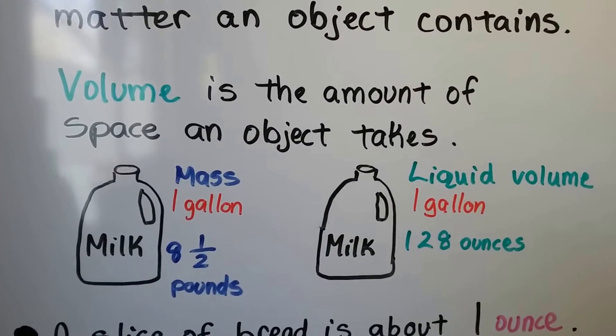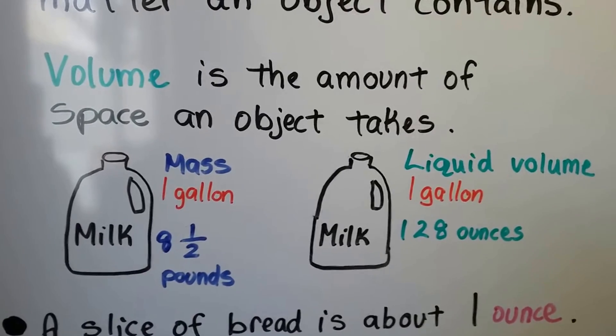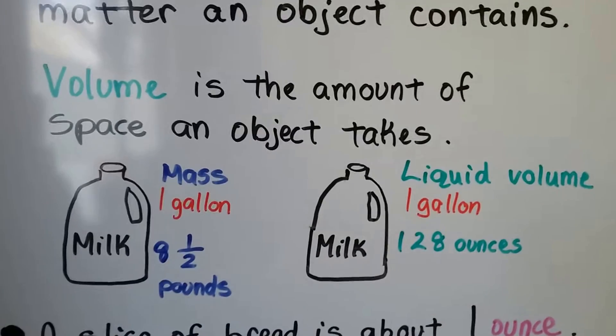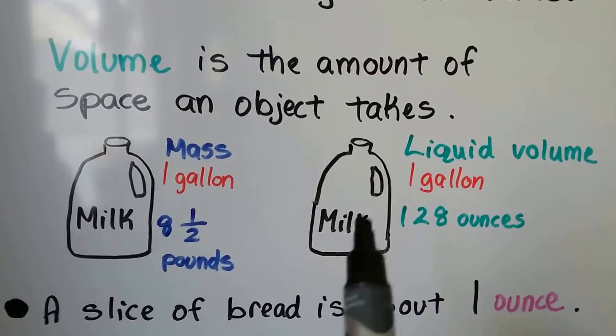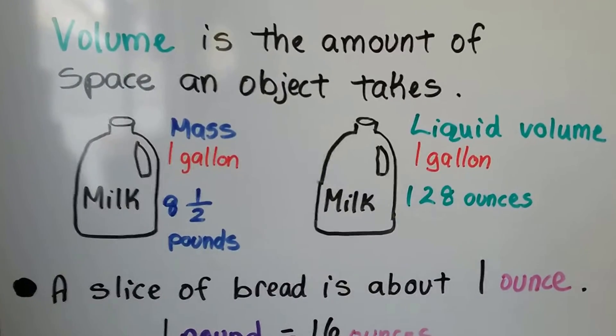That's how heavy it is. Volume is the amount of space an object takes. So if you have a gallon of milk, its mass would be eight and a half pounds, but its liquid volume would be 128 ounces. It would be four quarts. That's its liquid volume, how much liquid is inside of it. Mass is how heavy it would be when you go to pick it up.